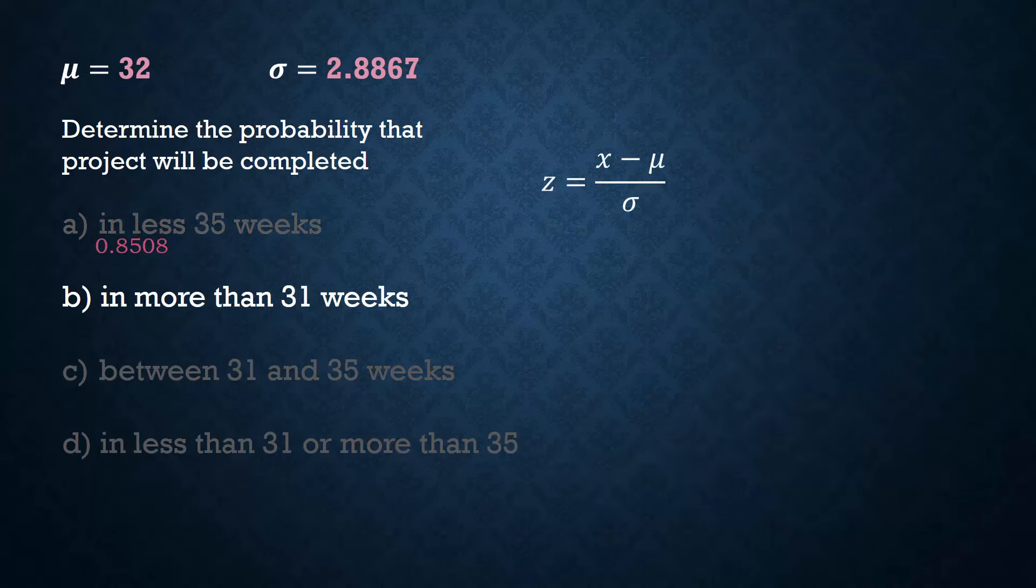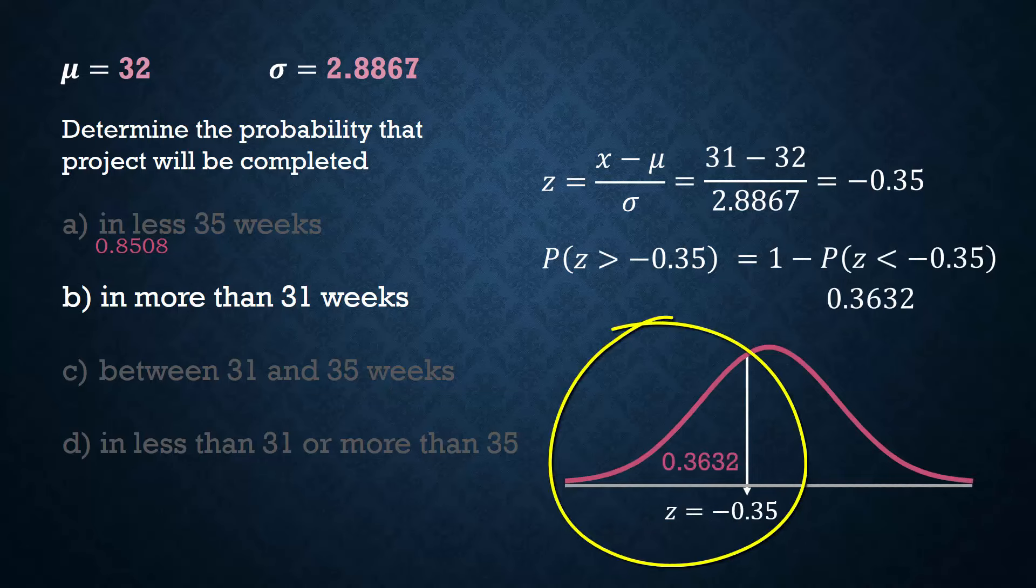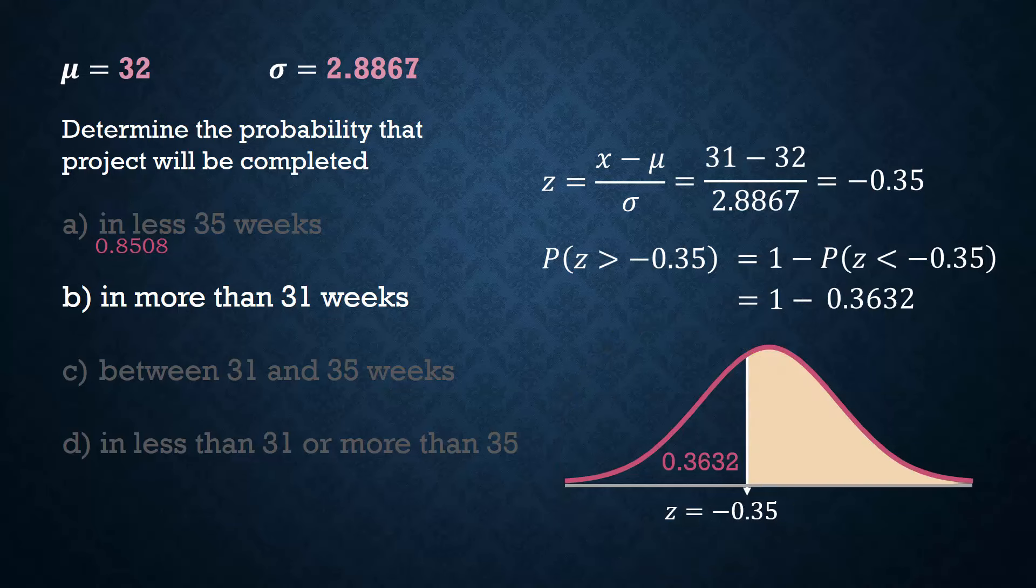For x greater than 31, we have z greater than negative 0.35. The area less than negative 0.35 is 0.3632. And subtracting it from 1, we obtain the more than area of 0.6368.